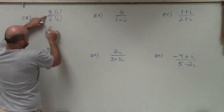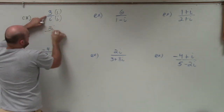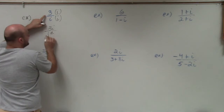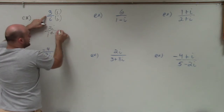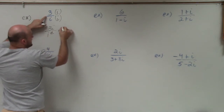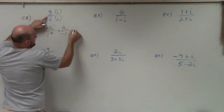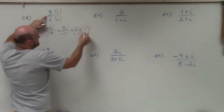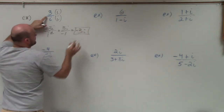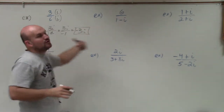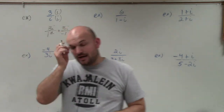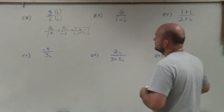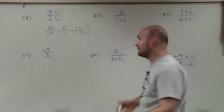So for example, 3 times i is 3i over i times i, which is i squared. Since i squared equals negative 1, that gives us negative 3i. By division, what we're doing is rewriting it without i in the denominator.